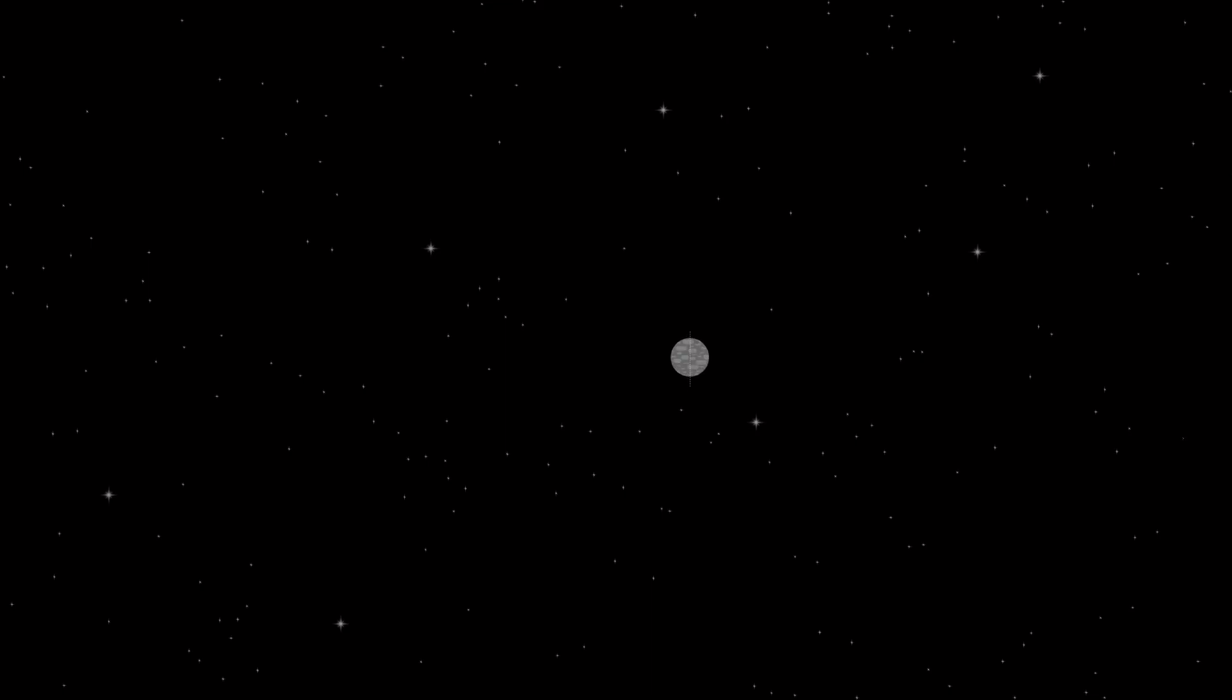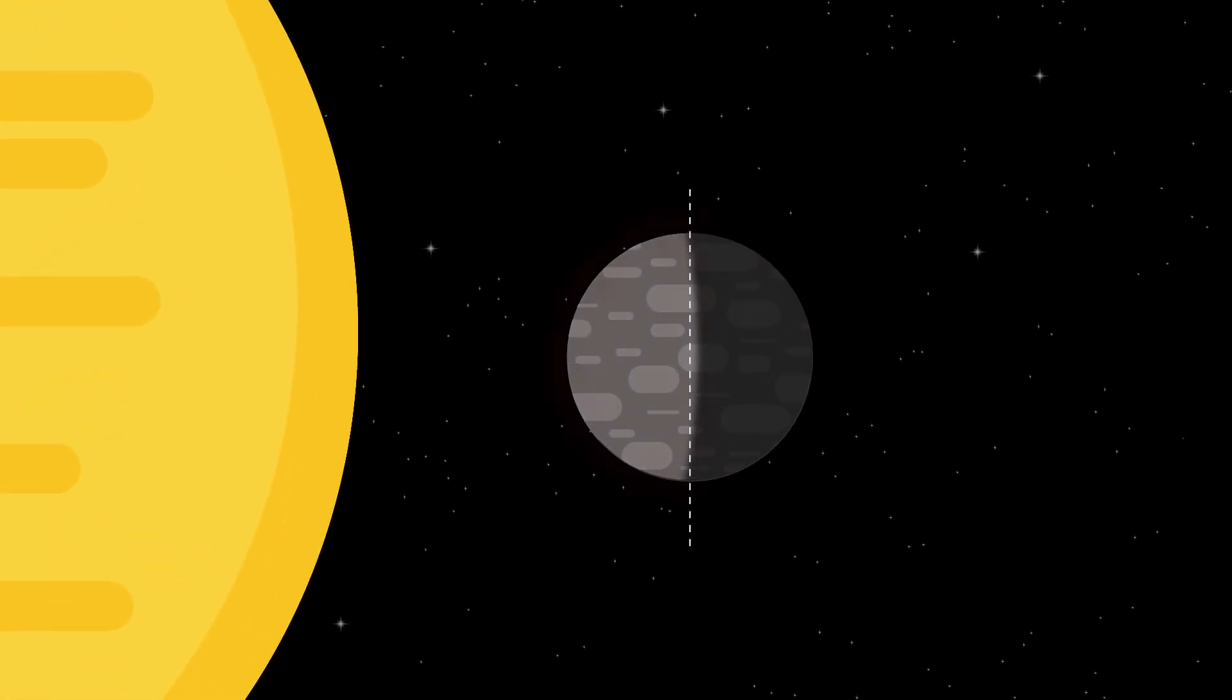Mercury is a tiny rocky world that's full of surprises. So close to the Sun that daytime temperatures can exceed 400 degrees Celsius, though it falls to about minus 130 degrees by night.